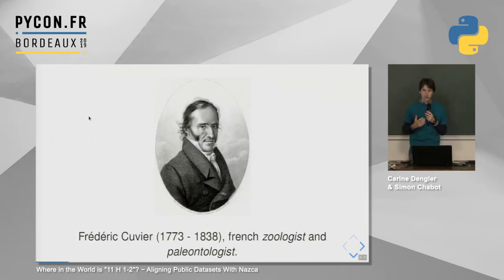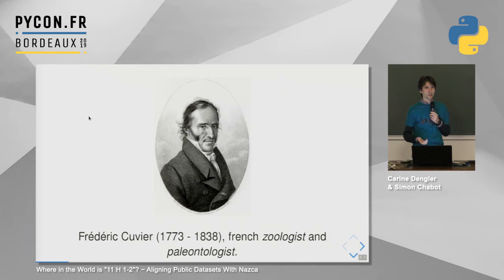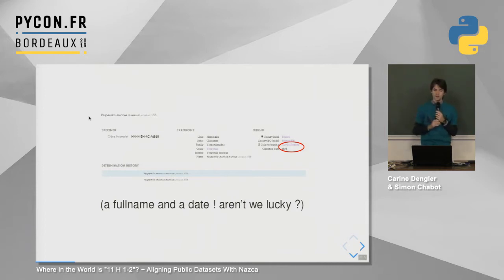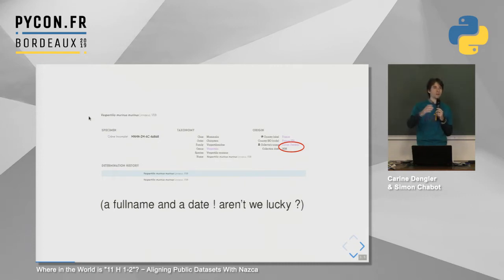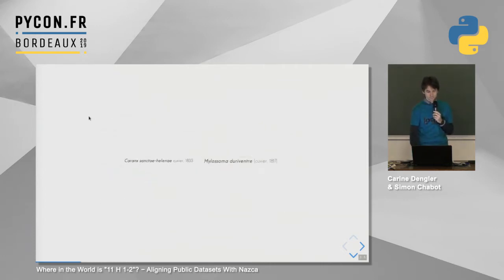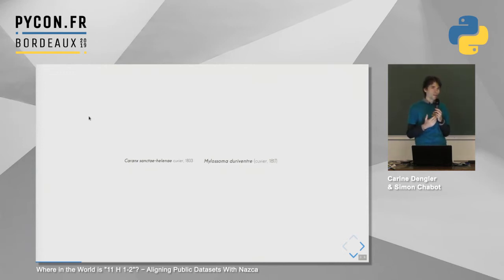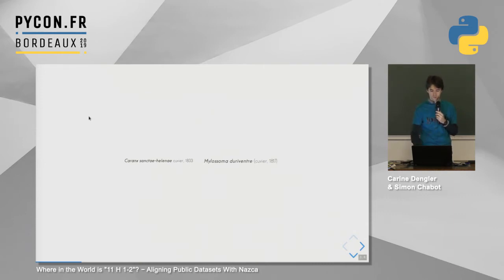Let's meet Frédéric Cuvier — he was a French geologist and paleontologist who made some collections during his life. This is what they have: a webpage showing the data in the database, with a full name and a date. In Latin it's quite easy to find the link. But sometimes we have only the last name, Cuvier, so maybe it's him, maybe it's not. Sometimes we have a date, sometimes we don't, and we have to find links and estimate a probability for each.